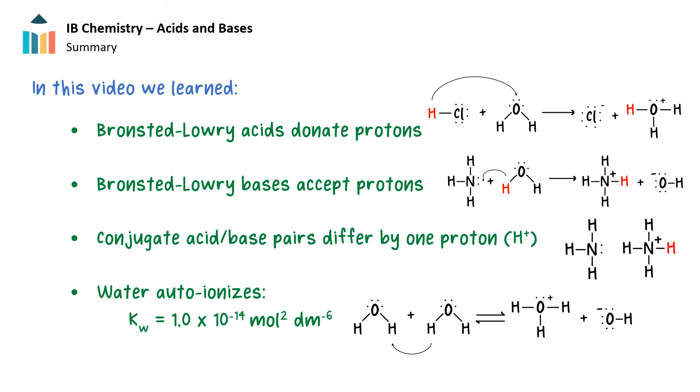So that's it for this video on acid and base theories. In this video, we learned that under the Bronsted-Lowry acid-base theory, Bronsted-Lowry acids, like hydrochloric acid, are proton donors. On the other hand, we learned that Bronsted-Lowry bases, such as ammonia, are proton acceptors. We also learned that conjugate acid-base pairs differ by only one proton, for example, ammonia and the ammonium ion. We also learned that since water can act as a Bronsted-Lowry acid or base, it can auto-ionize. The auto-ionization constant for water is 1 times 10 to the minus 14, and this number has implications for pH calculations, which we will cover in a future video.